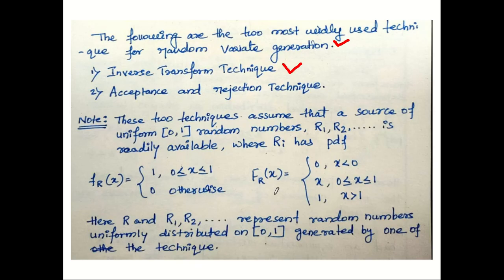The following are the most widely used techniques for random variate generation: the inverse transform technique and the acceptance-rejection technique. In this lecture, we are going to discuss the inverse transform technique for different distributions for generating random variates.